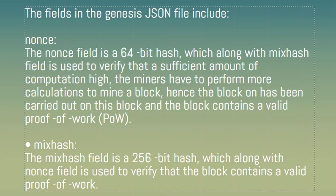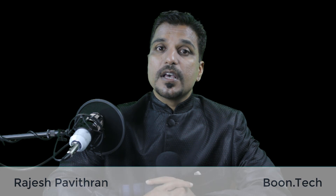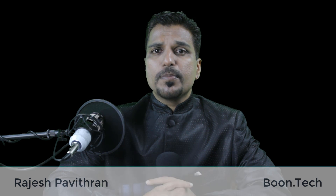A block is only valid if it contains a valid proof-of-work of a given difficulty. If the difficulty value is high, block generation time increases as the difficulty increases. For the private blockchain, we keep this value low so that the blocks can be mined faster and the transactions are processed faster.